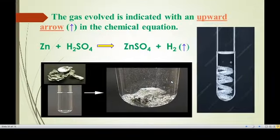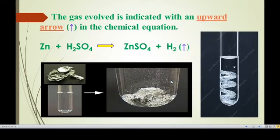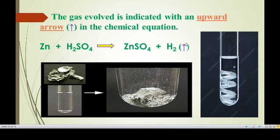The gas evolved is indicated with an upward arrow mark in the chemical equation. For example, zinc reacts with sulphuric acid to liberate hydrogen gas and produce zinc sulphate. You can see the bubbles indicating liberation of gas. While writing a chemical equation, liberation of gas is indicated with an upward arrow mark within the bracket.